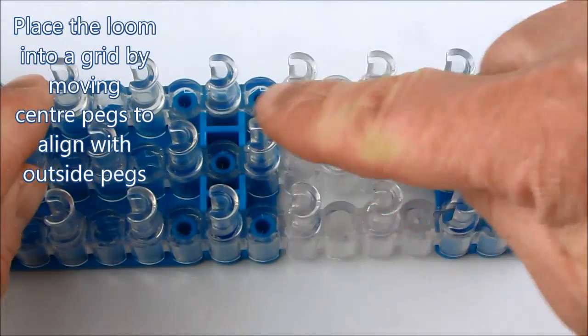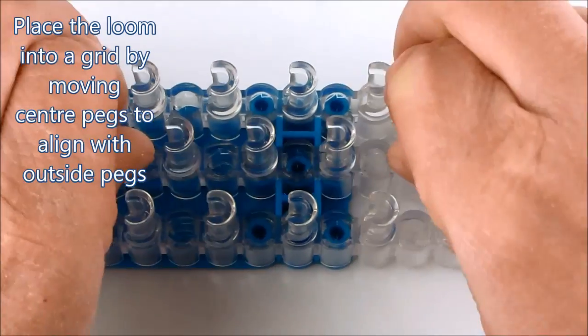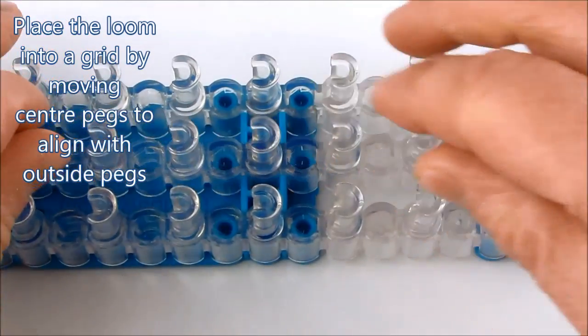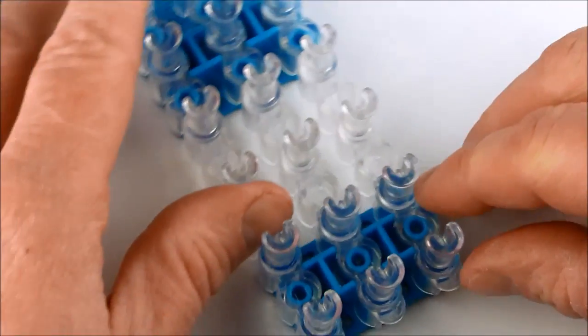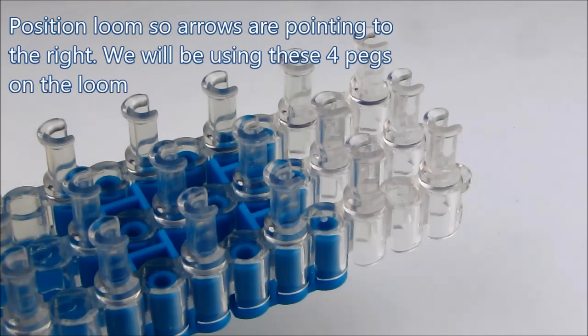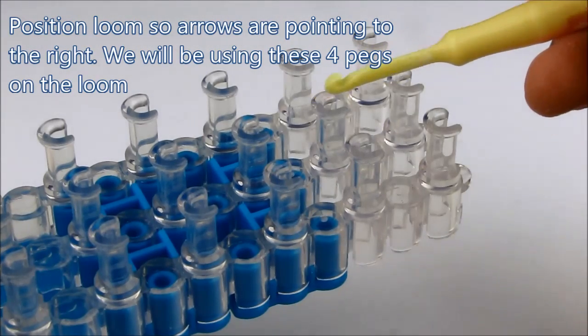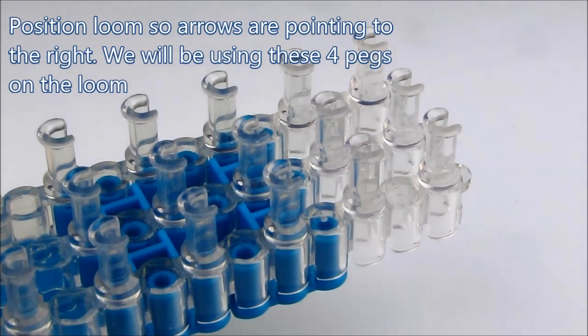Place the loom into a grid pattern by moving the center row of pegs so it lines up with the outside two rows. Position the loom so that the arrow is pointing to the right and we will use these four pegs here.